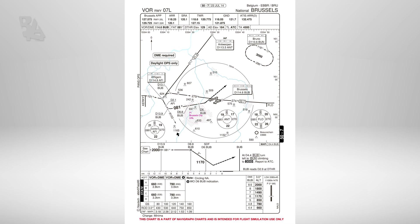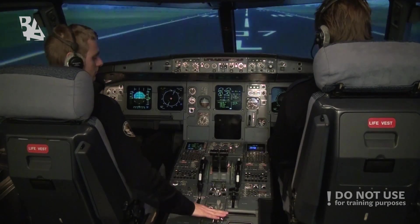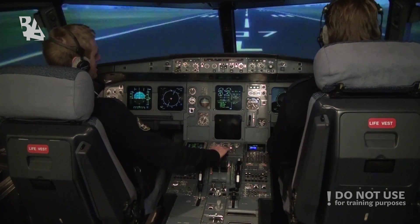Here we are at Bristol Airport, runway 07 Left. We are going to fly a DME arc approach. We have a distance of 10 nautical miles from the VOR and we cannot deviate plus or minus one nautical mile. We will follow this arc until we reach our final approach track of 081 degrees, and then we will turn to final and land on runway 07 Left. Ready? Ready. Take off.